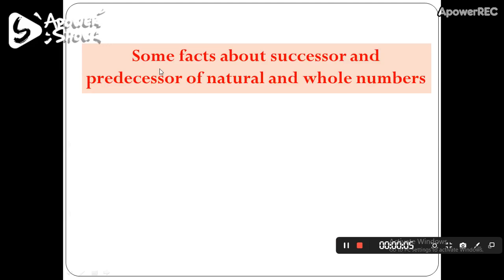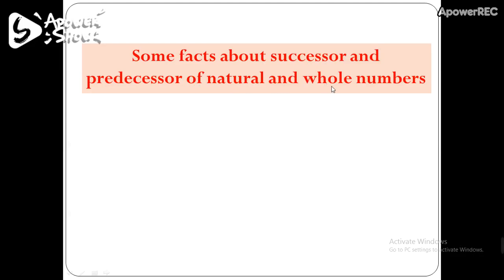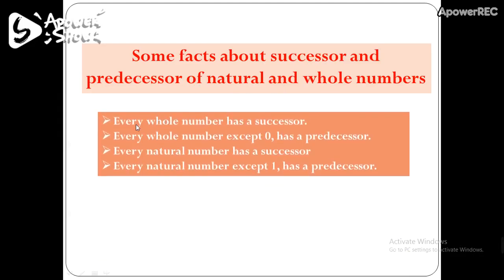Now let's learn some facts about successor and predecessor of natural and whole numbers. Every whole number has a successor. Every whole number except 0 has a predecessor, because if we subtract 1 from 0 we get minus 1, which is not a whole number.